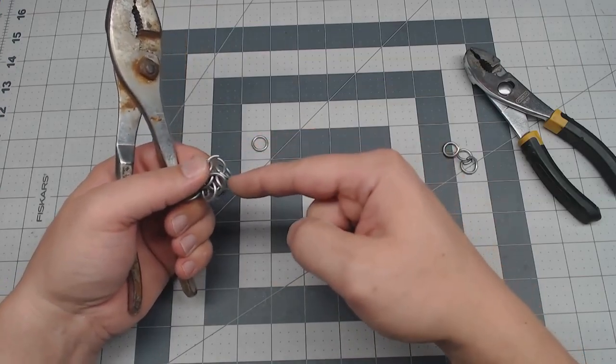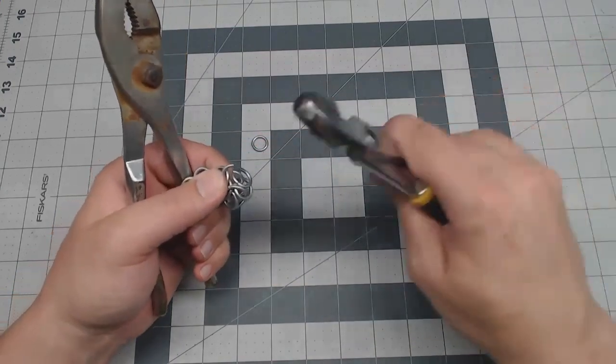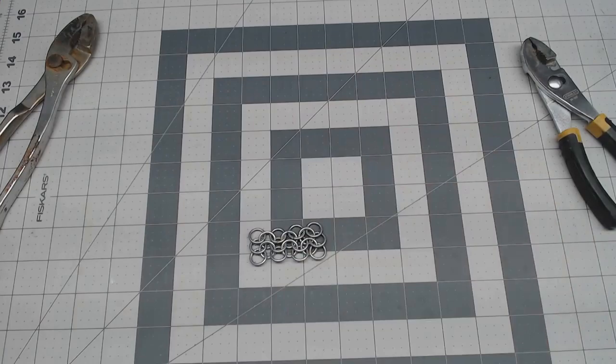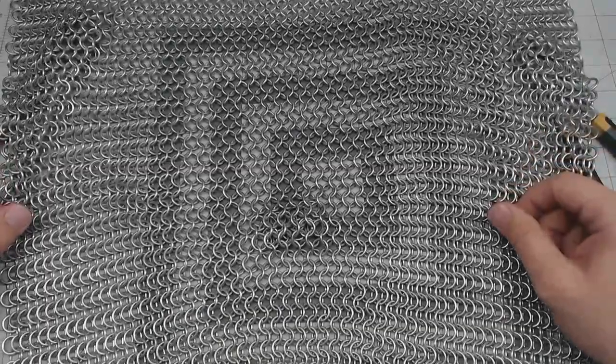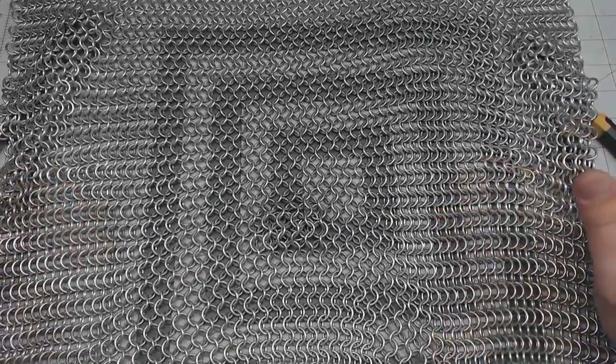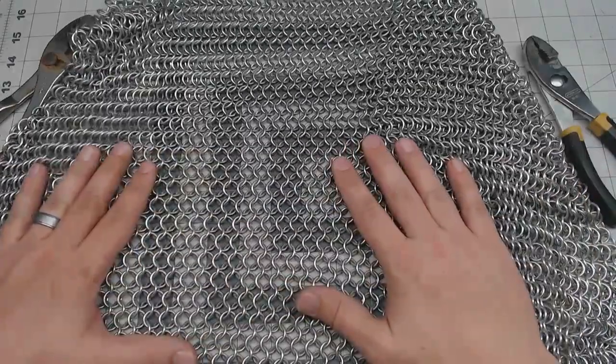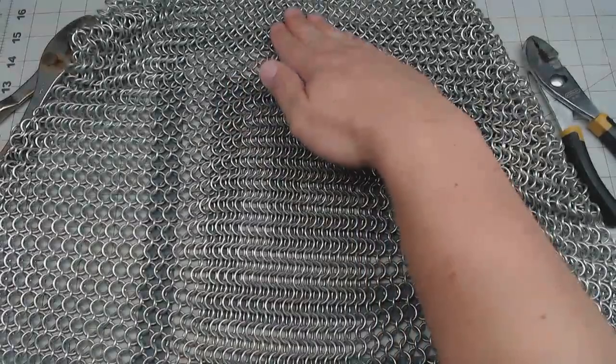So just keep doing that until you die and you'll eventually have this. One thing to keep in mind if you're making a vest or a hauberk or something is the direction of the weave. It will expand like this, like fish scales basically, but not this way—not really.